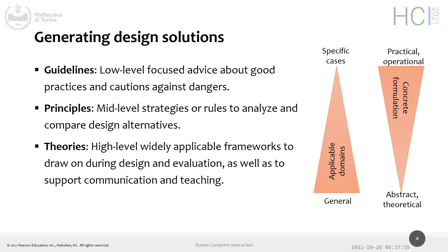In the literature you find different types and levels of guidance: theories, principles, and guidelines. Theories are the most general — for example, Norman's theory of interaction with the gulf of evaluation and gulf of execution. It's important to understand the mechanism, but it doesn't give immediate operational information. Knowing there is a gulf is useful, but how do you make it more narrow? Theories give us the framework to think about interaction.